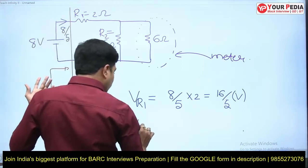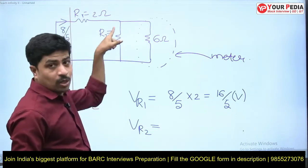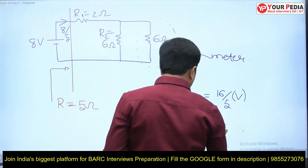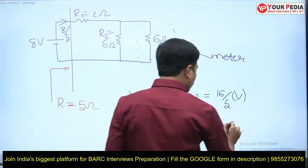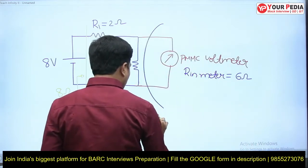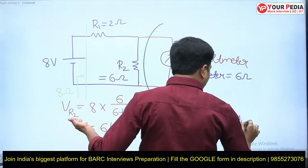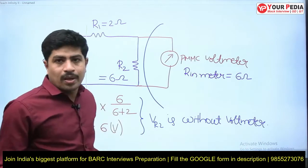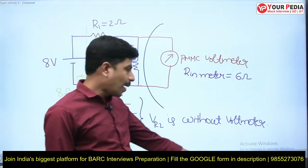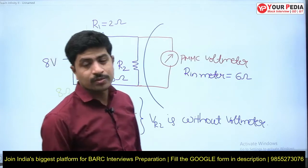V_R1 changed. Now what is V_R2? The total current is 8/5 A; since the two parallel resistances are equal (6Ω each), the current in R2 is (8/5)/2 = 8/10 A. So V_R2 = (8/10) × 6 = 4.8 volts. Without the voltmeter, I calculated and got 6 volts — I was expecting the same 6 volts when I connect the meter, but I'm getting only 4.8 volts.